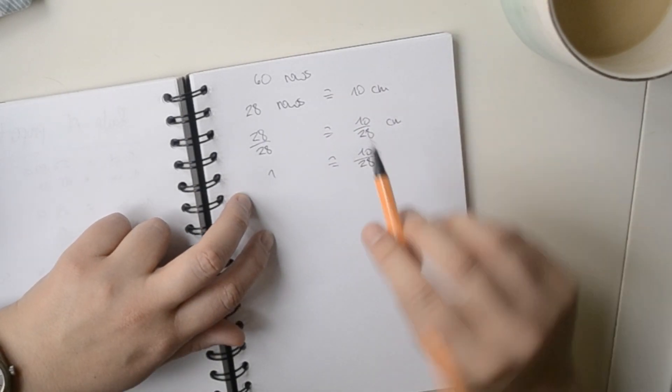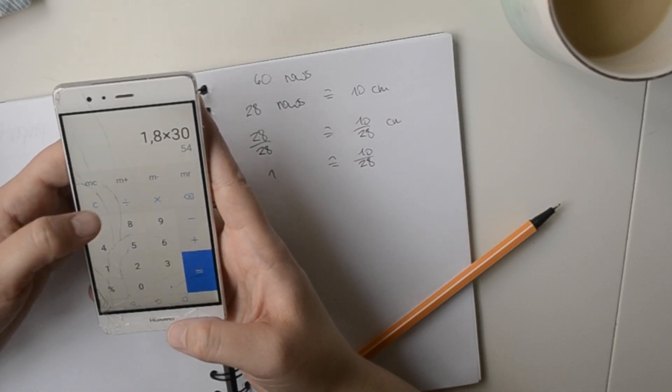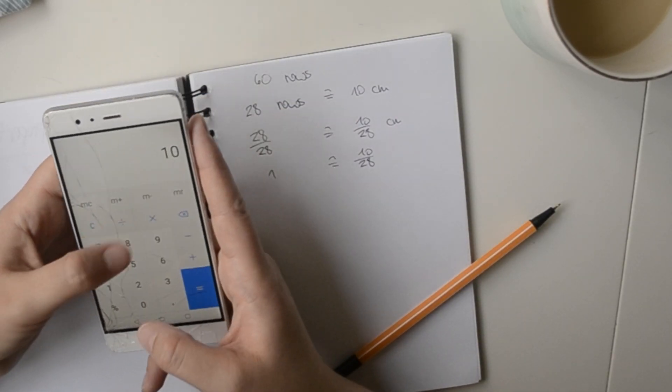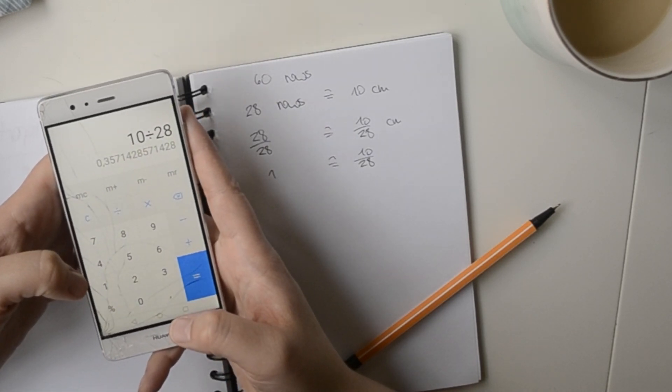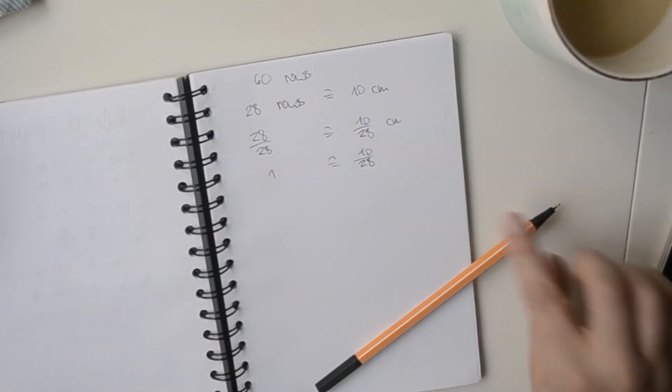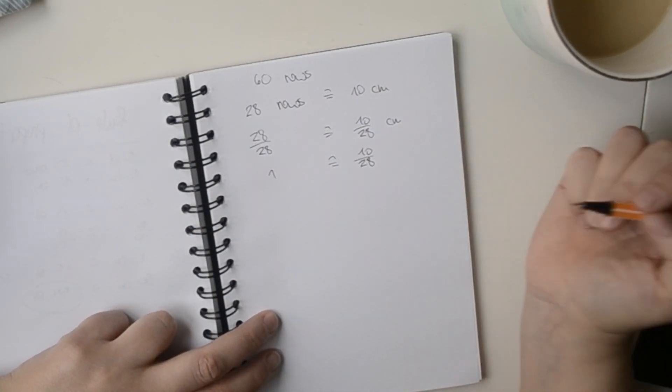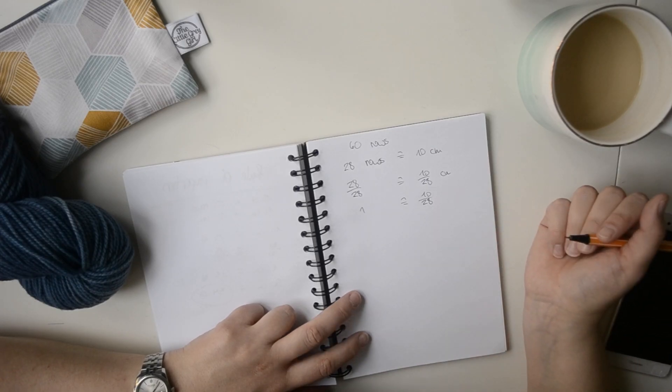And now this probably I can just make the calculation here. 10 divided by 28 is 0.3571, blah blah blah, and so on. So I can just wait a little bit with calculating this and leaving the equation like it is.